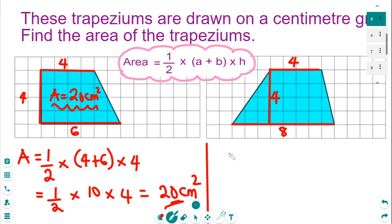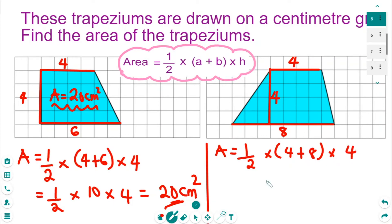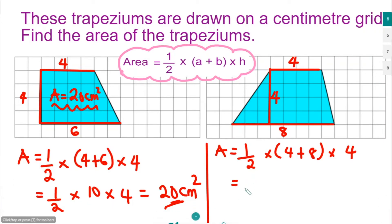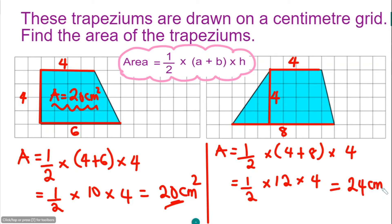With all these measurements, we can now calculate the area of this trapezium. That would be a half times the sum of the parallel sides A and B, which is 4 and 8, multiplied by the vertical height 4. Simplifying: a half times 12 times 4 gives 24 cm squared. So the area here is 24 cm squared.